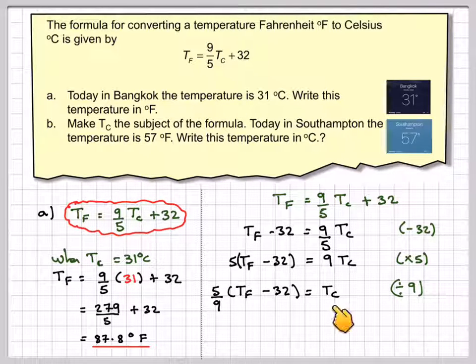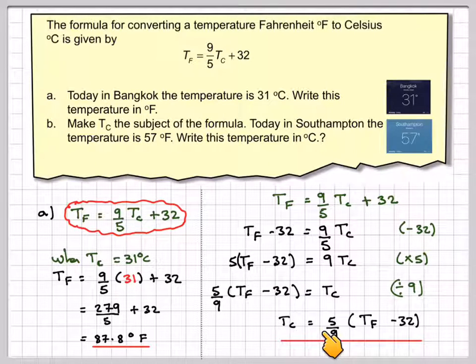The Tc's ended up on this side and the formula's ended up on this side, so we're just going to write it out the other way around: Tc equals 5 ninths, brackets Tf minus 32. Notice I've kept all my equal signs in a column so I get the idea of balance.